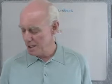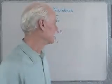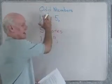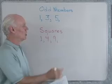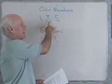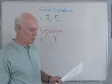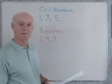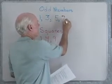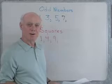la sequenza dei numeri dispari. Uno, tre, cinque. Il numero seguente, sette. E poi, nove.